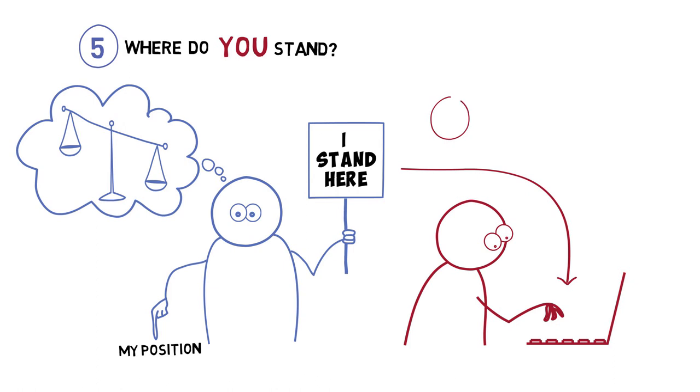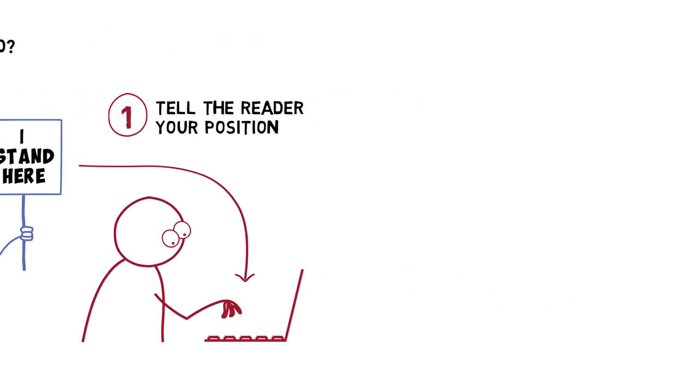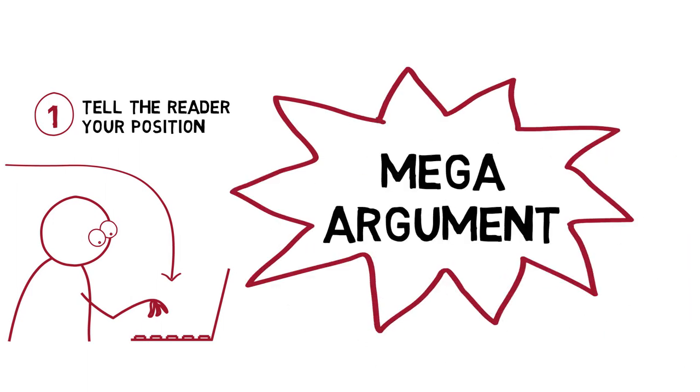The first rule of critical writing is therefore to tell the reader your position. Make sure you are clear about where you stand on the topic at hand. This position informs your mega argument. In the US, this is called your thesis statement. It is the overall argument that you will develop throughout the piece of writing.